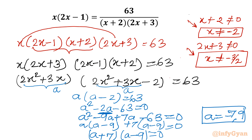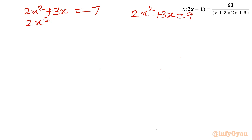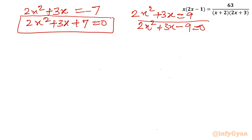Now I will equate 2x squared plus 3x, which equals a, to minus 7 and to 9 separately, giving two quadratic equations. From a equal to minus 7: 2x squared plus 3x plus 7 equal to 0. From a equal to 9: 2x squared plus 3x minus 9 equal to 0.